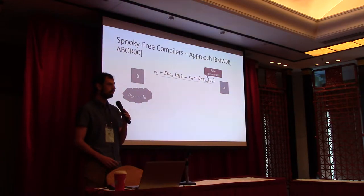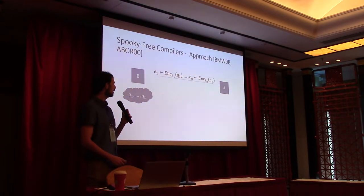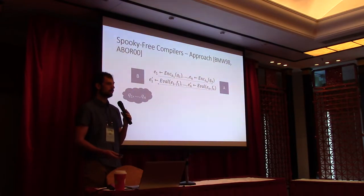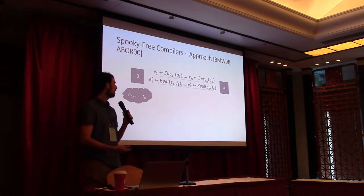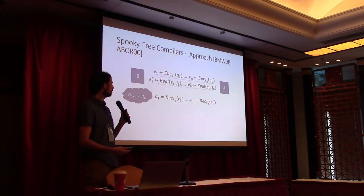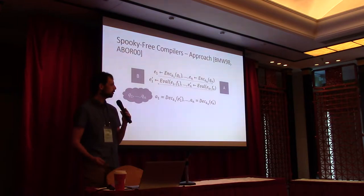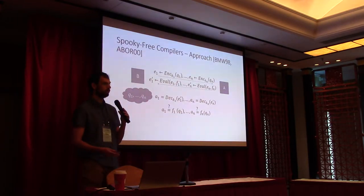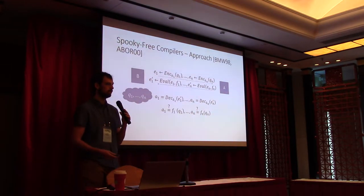Bob is going to use a fully homomorphic encryption scheme. Since the scheme is fully homomorphic, this allows Alice to evaluate the function on each of the ciphertexts. At the end, Bob can decrypt each of the evaluated ciphertexts, and since this is a fully homomorphic encryption scheme, we get that each answer is the resulting function that Alice computed.